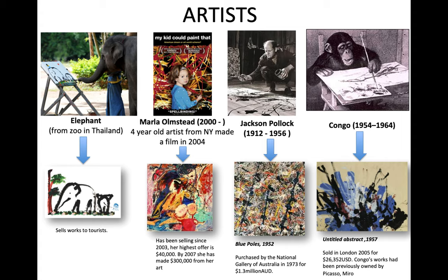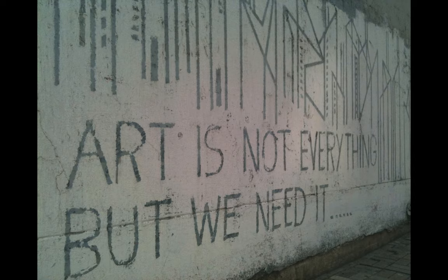There's the 1.3 million dollar Pollock purchased in 1973 as we discussed. And Congo's painting is interesting because it was sold at auction for $26,000 — but what adds value is that it was previously owned by Picasso. The history of where a painting has been can add value to the artwork. When talking about art, who values it and what is considered art — value and money often go hand in hand. Not always, but quite often.